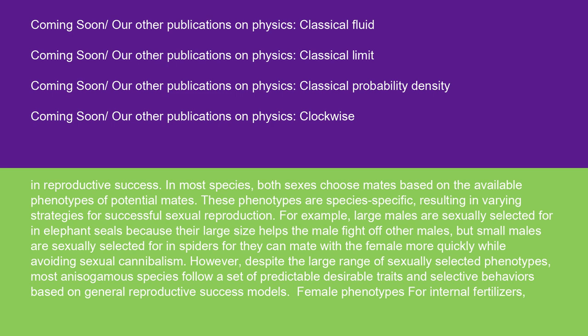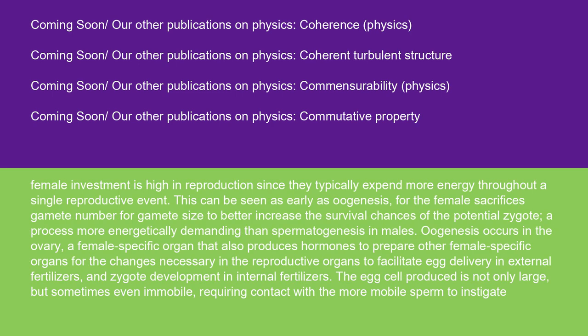Female phenotypes for internal fertilizers: female investment is high in reproduction, since they typically expend more energy throughout a single reproductive event. This can be seen as early as oogenesis, for the female sacrifices gamete number for gamete size to better increase the survival chances of the potential zygote, a process more energetically demanding than spermatogenesis in males. Oogenesis occurs in the ovary, a female-specific organ that also produces hormones to prepare other female-specific organs for the changes necessary to facilitate egg delivery in external fertilizers and zygote development in internal fertilizers.